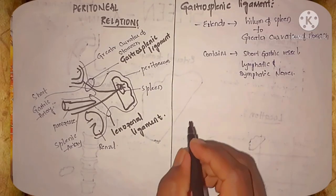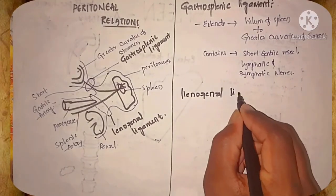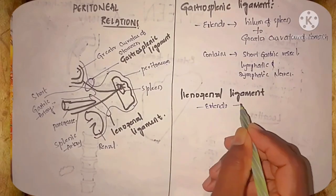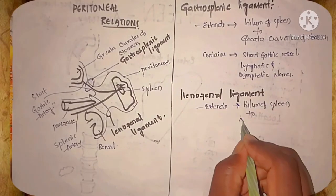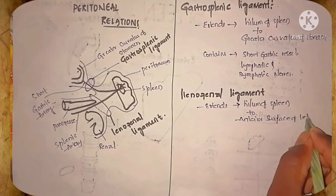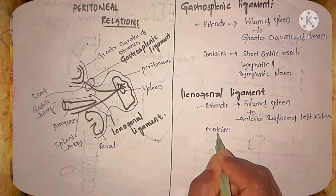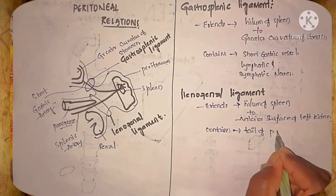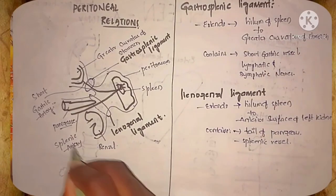In the lienorenal ligament, it extends from the hilum of the spleen to the anterior surface of left kidney. The contents it contains are tail of pancreas, splenic vessels, and lymph nodes.